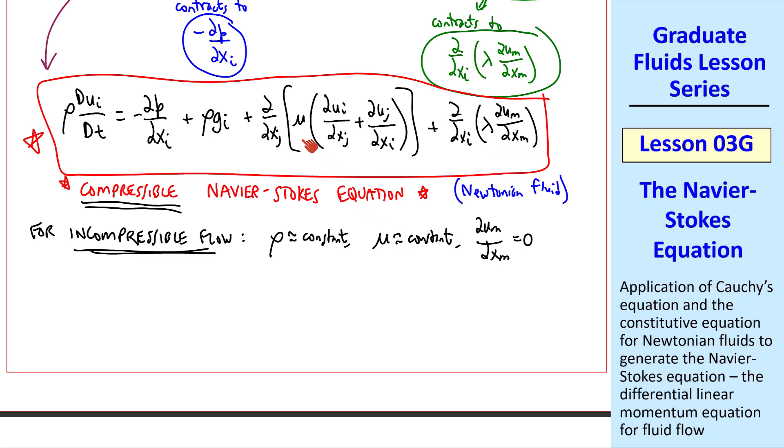So this equation becomes rho dui dt is minus del p del xi, plus rho g i, plus mu, and then I'll leave it for an exercise for you to show that this reduces to del squared ui del xj del xj.